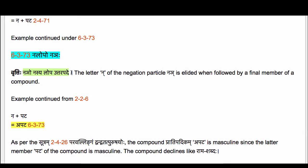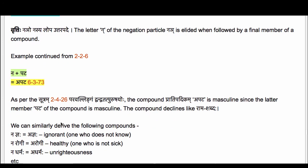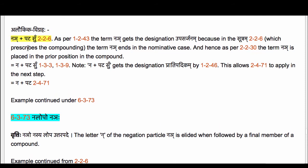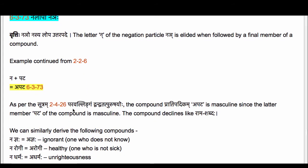The meaning of the Sutram is: the letter Na of the negation particle Nyai is elided when followed by a final member of a compound. What do we have right now? We have Na Pata — we do have the particle Nyai. The ending letter Na of the particle Nyai is an it valentiyam and takes Lopaha — Matasya Lopaha. That is how we are at the stage of Na Pata.